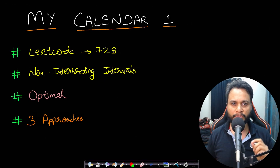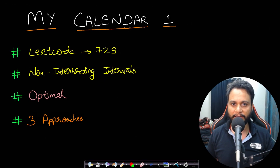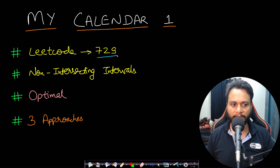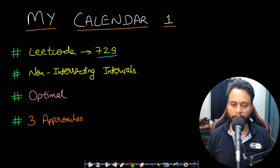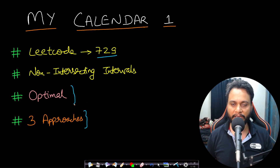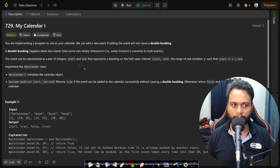Hello guys, welcome back to TakeDose. In this video we will see the My Calendar One problem from LeetCode number 729. It is based on the non-intersecting intervals problem, and we will be seeing three approaches to solve this problem. At the end I will show you the optimal approach.